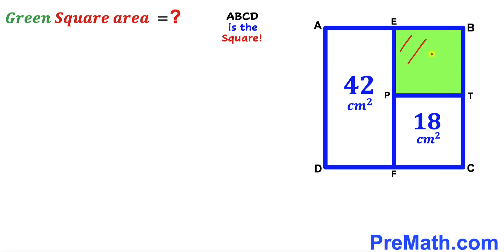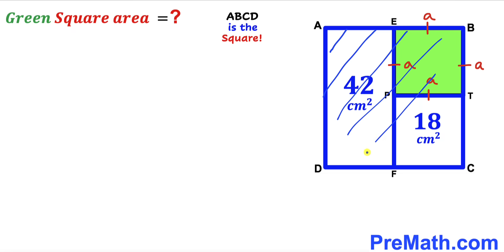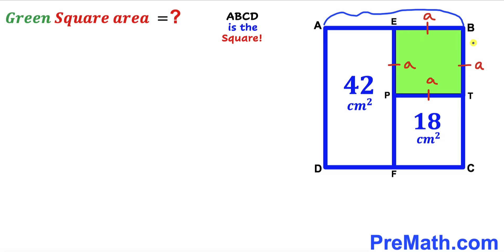Let's focus on the green shaded square EBTP. We know this is a square, so all side lengths are equal. If I label this side length as lowercase a, then all four sides are going to be lowercase a across the board. Now let's focus on the big square ABCD. Since we are dealing with a square, I'll label side AB as lowercase b, and side BC as lowercase b as well.